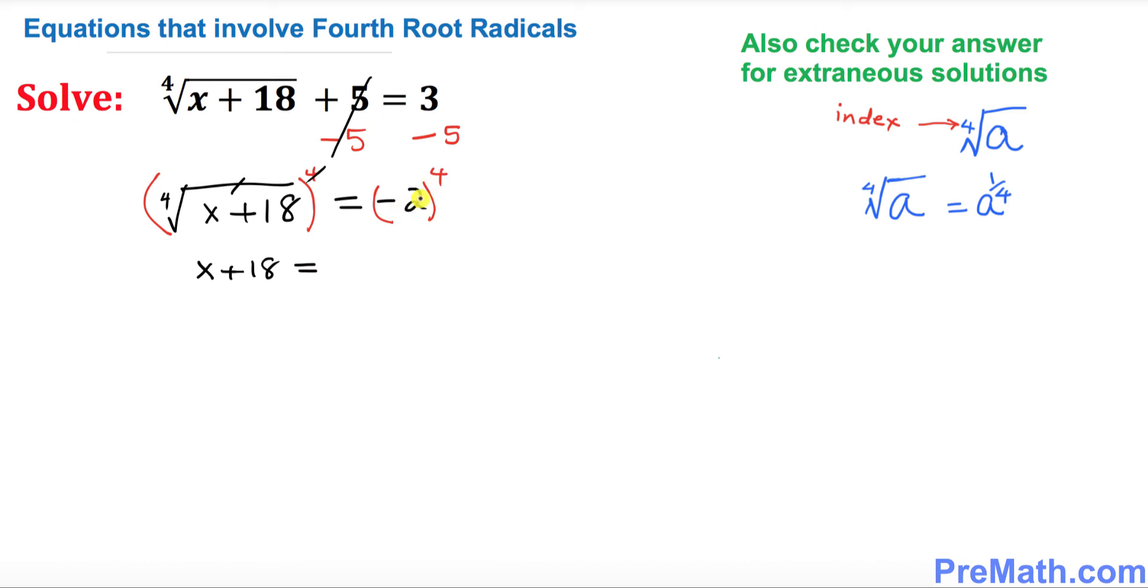Multiplying negative 2 four times gives us 16. Now we isolate x by subtracting 18 from both sides. This cancels out, and x turns out to be negative 2 as our solution. Keep in mind that if you have a fourth root and take it to the power 4, that equals the original value a.